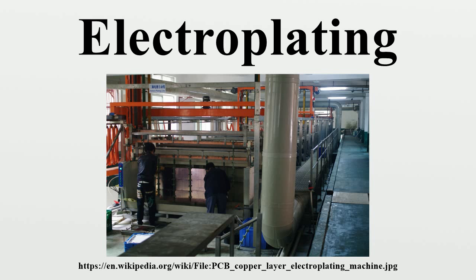A closely related process is brush electroplating, in which localized areas or entire items are plated using a brush saturated with plating solution. The brush, typically a stainless steel body wrapped with a cloth material that both holds the plating solution and prevents direct contact with the item being plated, is connected to the positive side of a low-voltage direct current power source, and the item to be plated connected to the negative. The operator dips the brush in plating solution then applies it to the item, moving the brush continually to get an even distribution of the plating material.